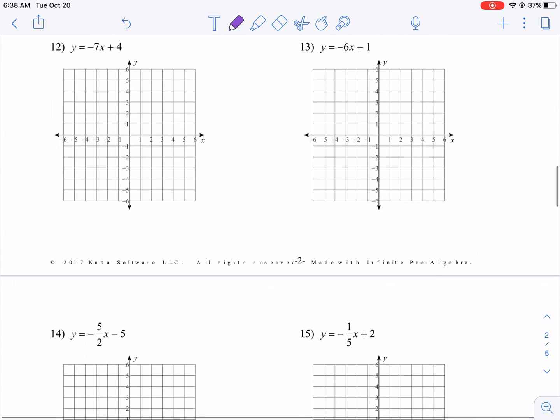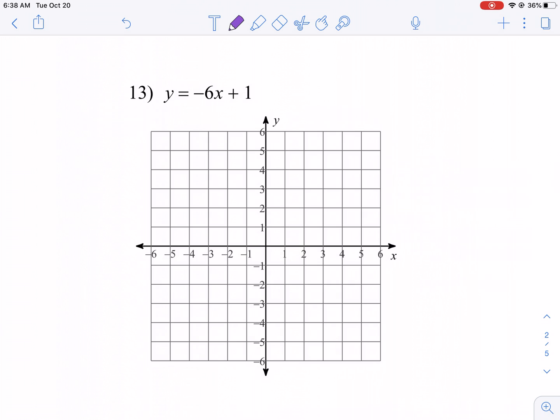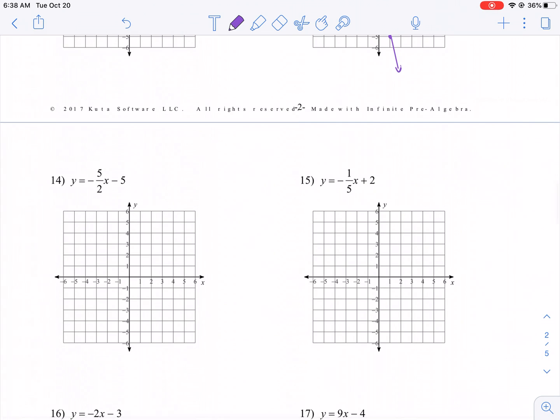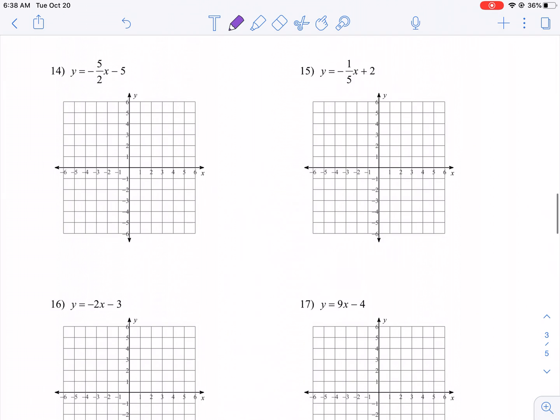Maybe just one more for fun. Because we're having so much fun. Y equals negative six x plus one. Y intercept of one. And then this is negative six over one technically. So I'm going to go down six. One, two, three, four, five, six. And then I'm going to go over to the right one. And then I make a dot there. And then I connect the dots. This is my favorite part. All these are pretty basic.